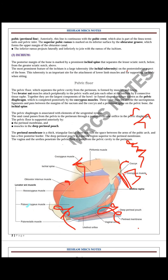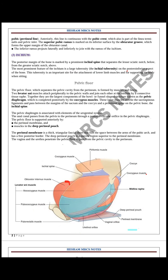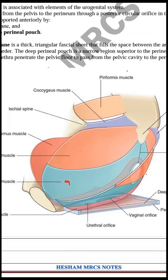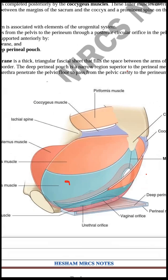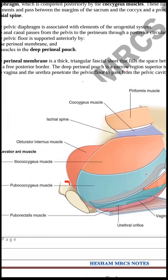The pelvic floor or pelvic diaphragm is formed of two muscles: the levator ani and the coccygeus muscle. The levator ani has three parts. I will try to draw these structures for clarity.